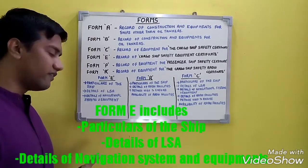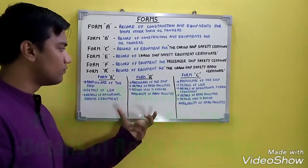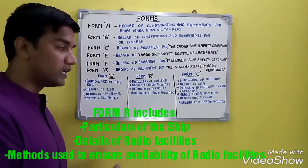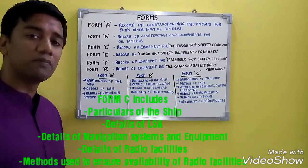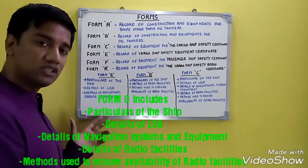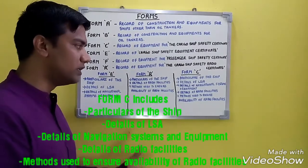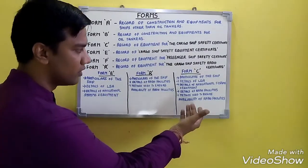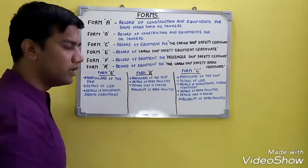Form E includes particulars of the ship, details of life-saving appliances, and details of navigation systems and equipment. Form R represents particulars of the ship, details of radio facilities, and the method used to ensure availability of radio facilities. Form C includes particulars of the ship, details of life-saving appliances, details of navigation systems and equipment, details of radio facilities, and methods used to ensure availability of radio facilities.